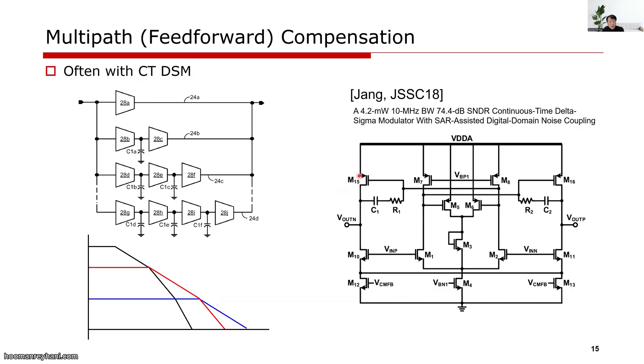One example is a two-stage amplifier where the input is given not only to the first stage but also to the second stage. This creates a parallel path of a two-stage amplifier and a one-stage amplifier.